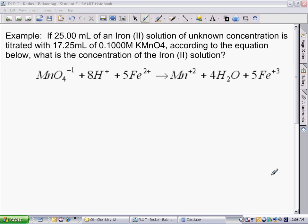This is an example problem for a redox titration. If 25.00 mL of an iron(II) solution of unknown concentration is titrated with 17.25 mL of a 0.1 molar KMnO4 solution, according to the equation below, what is the concentration of iron(II)?